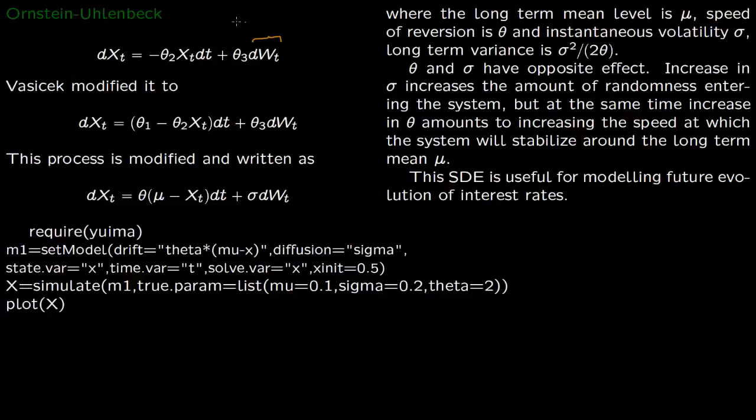So this process was modified by Vasicek. Vasicek put a theta 1 in front of the process. So theta 1 minus theta 2 Xt dt. So this became a new process and this is generally written as dXt equals theta times mu minus Xt dt plus sigma dWt.